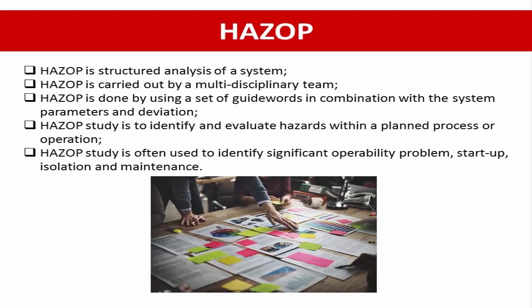A HACCP study is often used to identify the significant operability or quality problem, including significant operability problems, isolation problems, preparation, or removal for maintenance. HACCP is done by using a set of guide words in combination with the system parameters to see the meaningful deviation from the design intention.